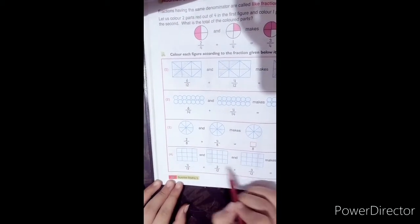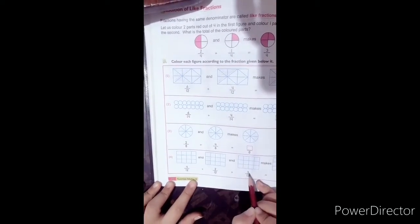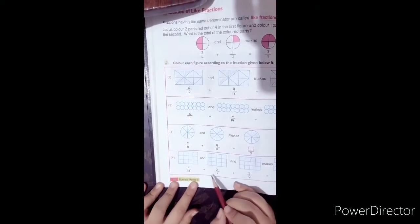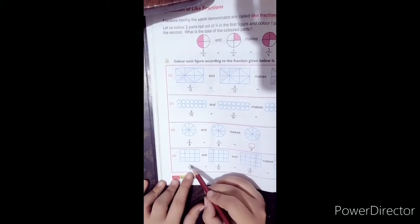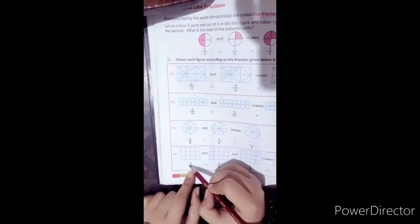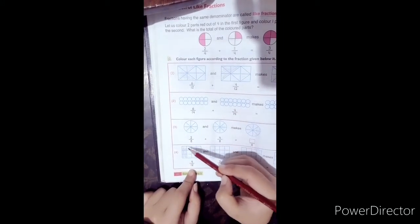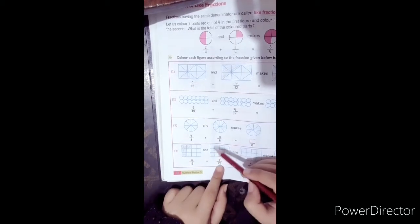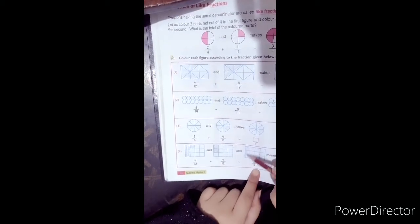Let's solve another question, question number 4. Here I have 3 fractions given: 4 by 12, 2 by 12, 3 by 12. When I add these fractions, I will add parts like 4 parts out of 12, 2 parts out of 12, 3 parts out of 12. We will color 4 parts, then 2 parts, and 3 parts.